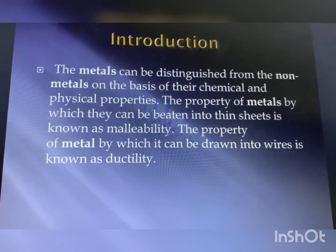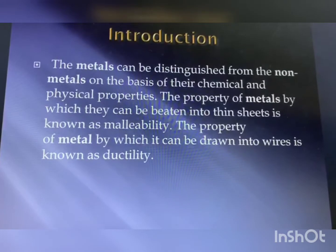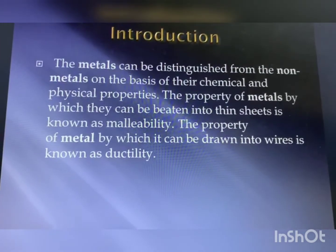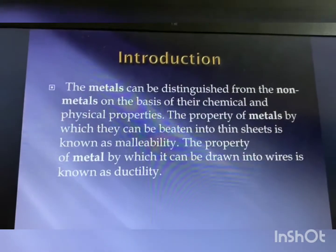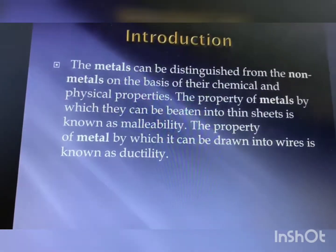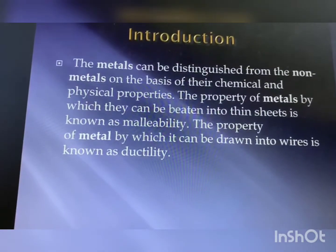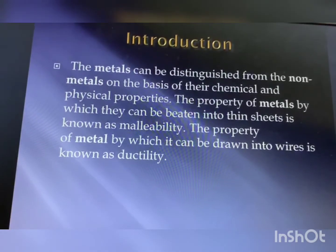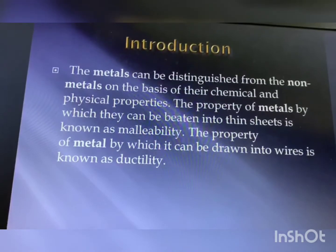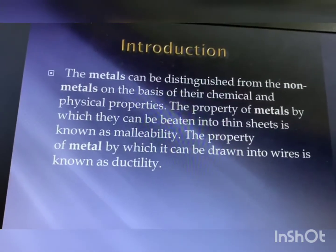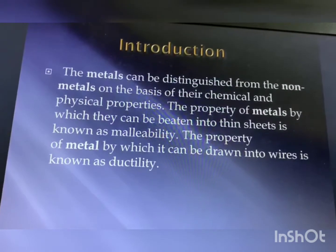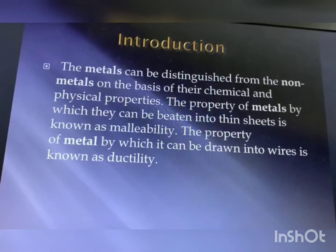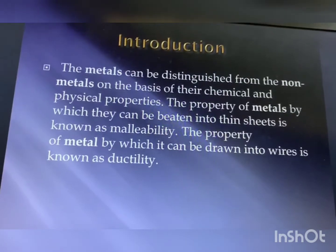Metals in their pure state have a shining surface; this property is known as metallic luster. Metals are generally hard in nature, and this hardness varies from metal to metal. Some metals can be beaten into thin sheets — that property is malleability. The ability of metals to be drawn into thin wires is known as ductility. Gold is the most ductile metal.